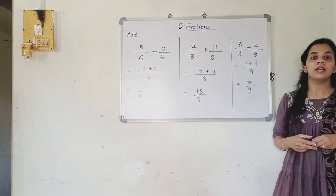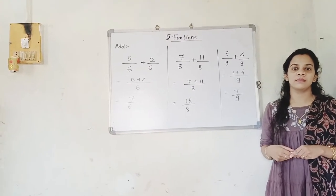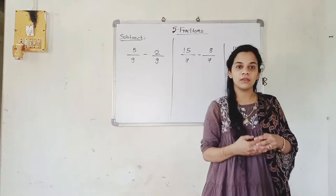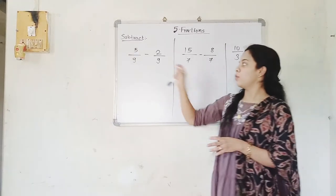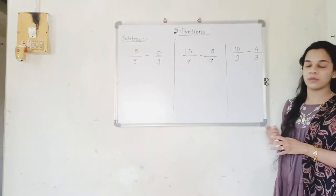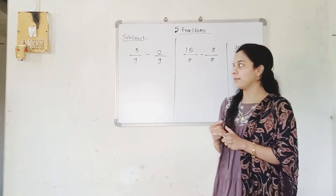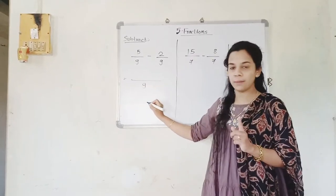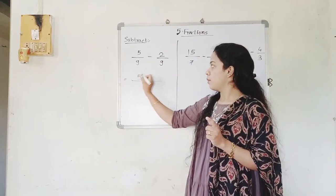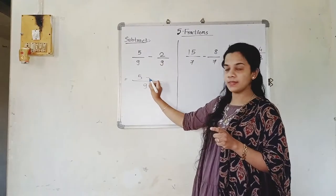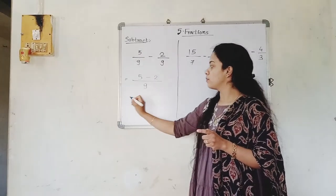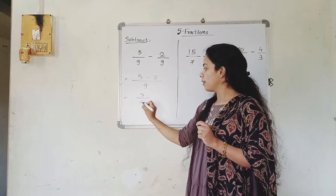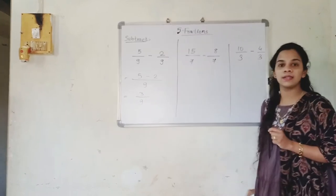Now we are going to see the subtraction of like fractions. The denominators are the same in all three questions, so we are going to subtract them using the same method. Denominators are common, so we write it one time. We write 5, then minus sign, and 2 — subtracting the numerators. 5 minus 2 is 3 upon 9. So the answer is 3 upon 9.